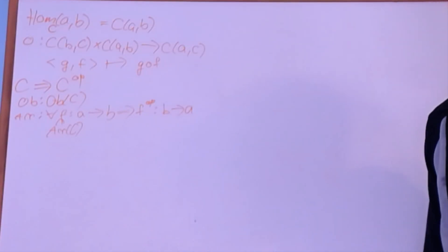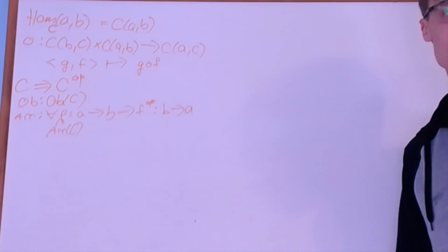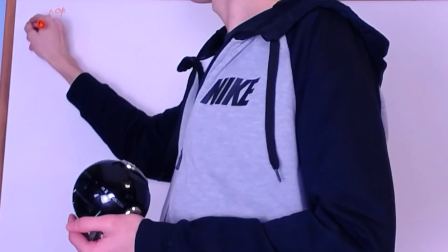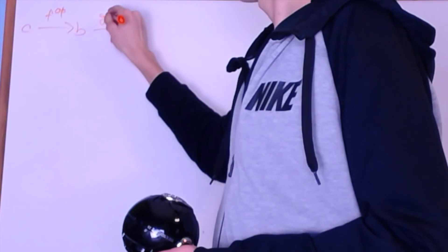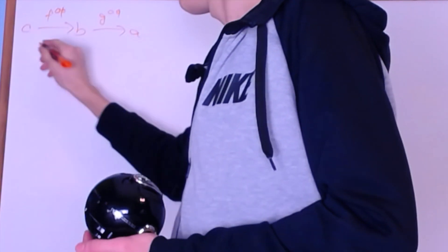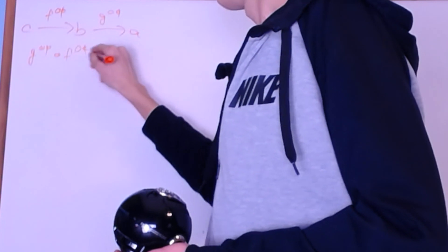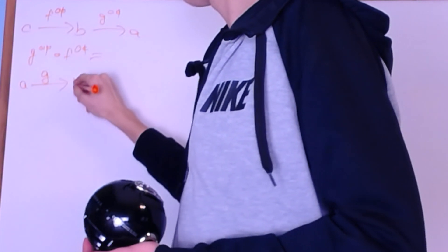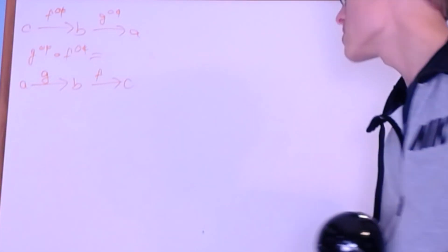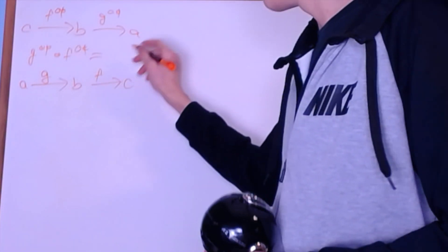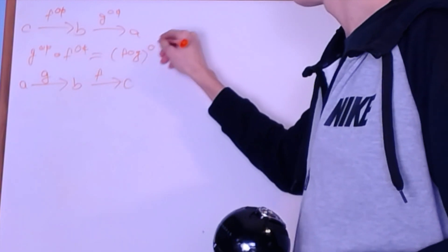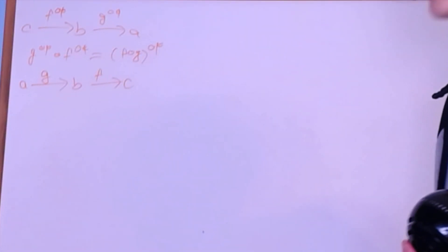This category will be important when we talk about contravariant functors and sheaves. The way we define composition is: if I have F^op from C to B and G^op from B to A, I define G^op composed F^op by looking at the diagram in the normal category — G from A to B and F from B to C — and then doing F composed G within that category and taking the opposite of that to move it back into the opposite category.